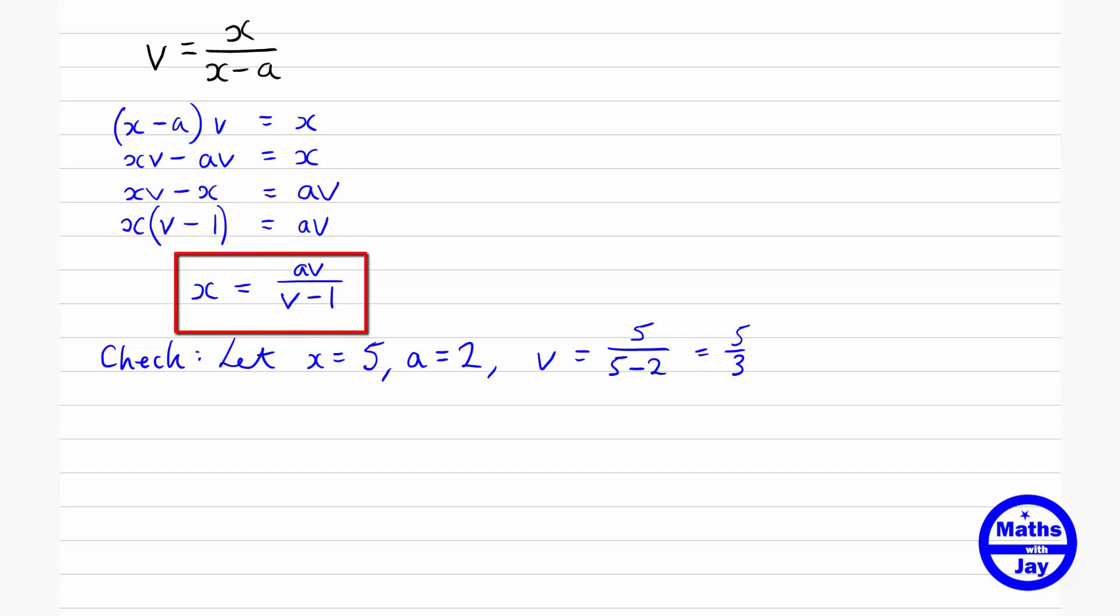So I'm looking at my formula now: x equals av over (v-1). If a is 2 and v is 5 over 3, using my little formula that I've just got, x is a times v, so that's 2 times 5/3—that's the top of our fraction.